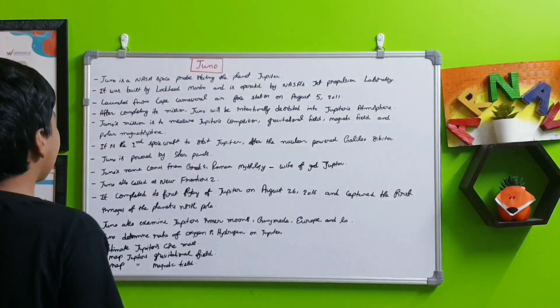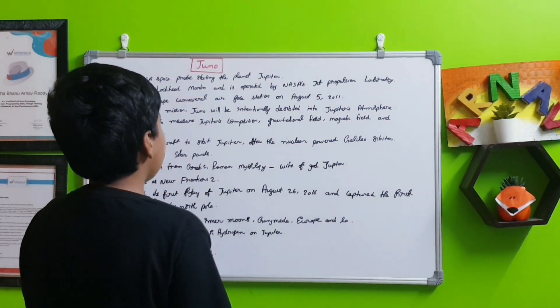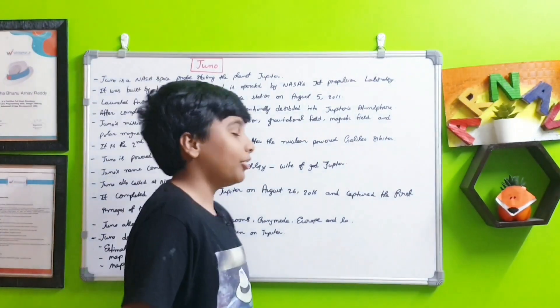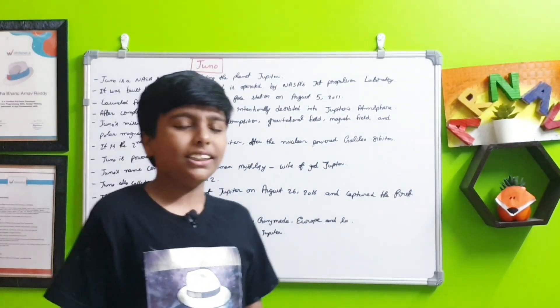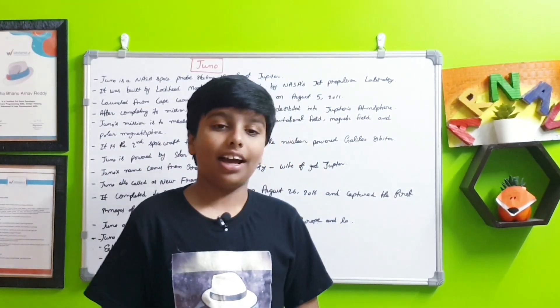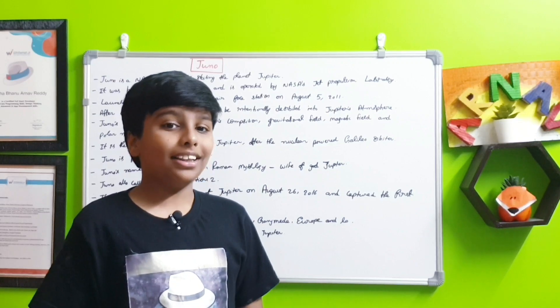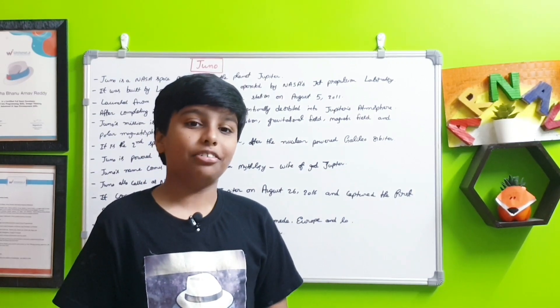After completing its mission, Juno will be intentionally de-orbited into Jupiter's atmosphere. First it was planned that would happen in 2018, but then it was delayed to 2025.